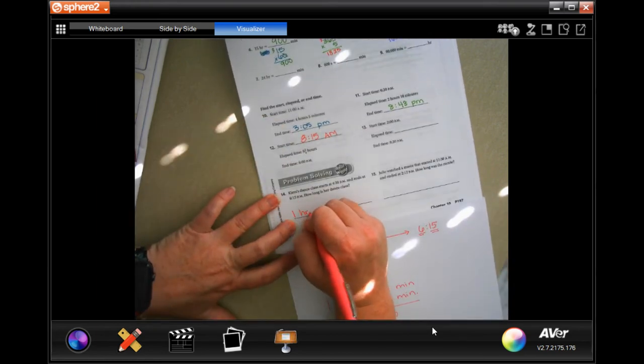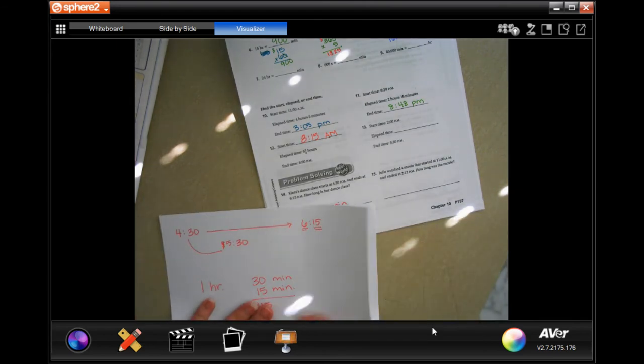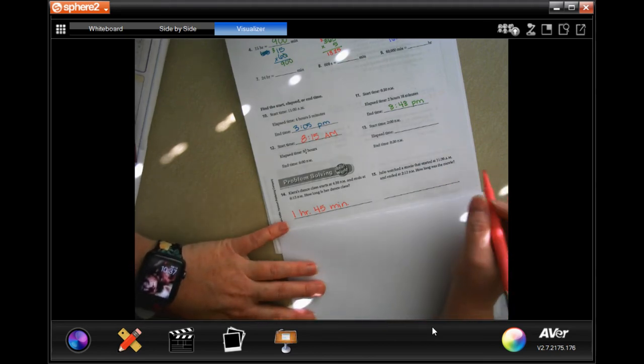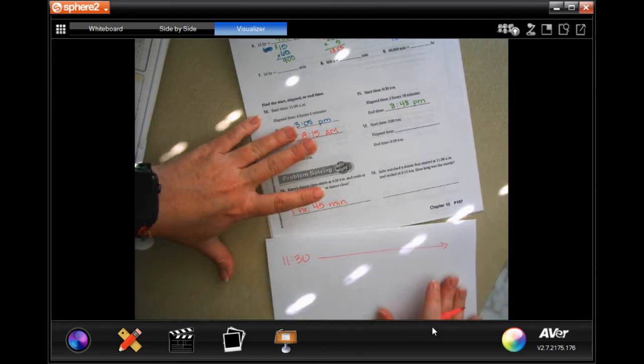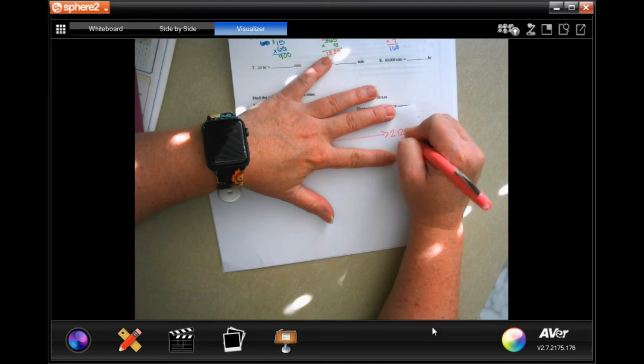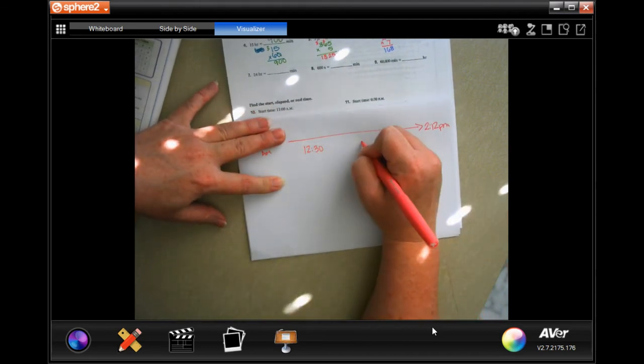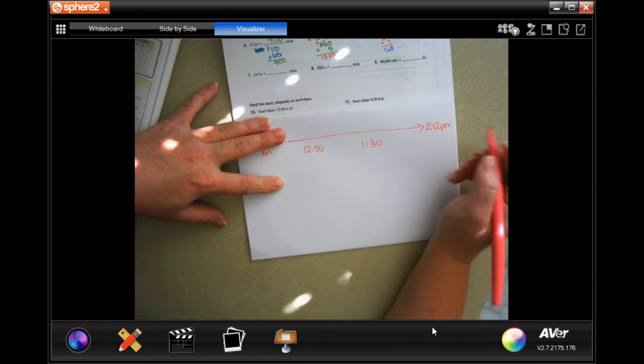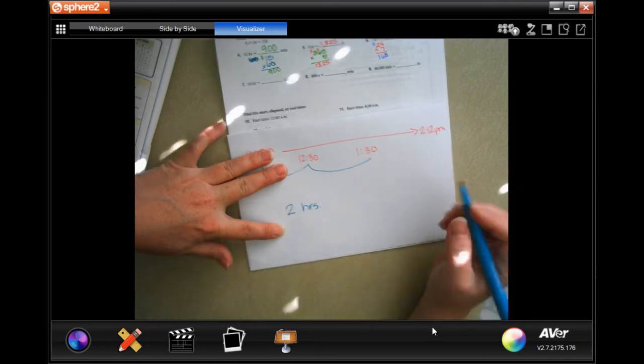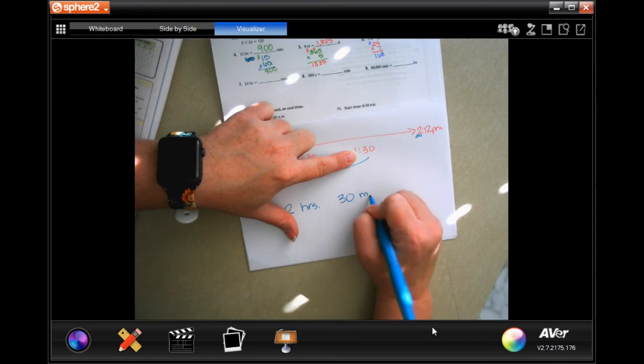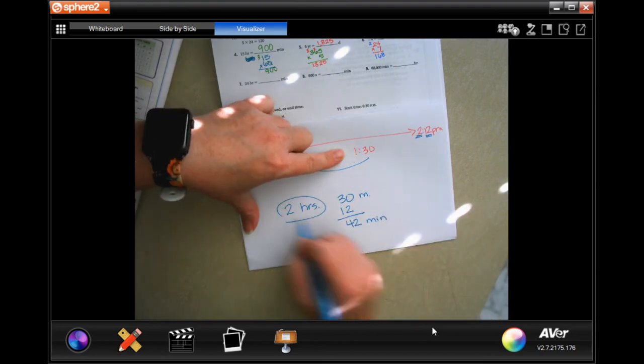Julio watched a movie that started at 11:30 AM and ended at 2:12 PM. How long was the movie? 11:30 to 12:30, 1:30 - that's two hours. Now to get from 1:30 just to 2 o'clock that's 30 minutes, and then I have to add on that other 12. That gives me 42 minutes. Two hours 42 minutes. That's a very long movie.